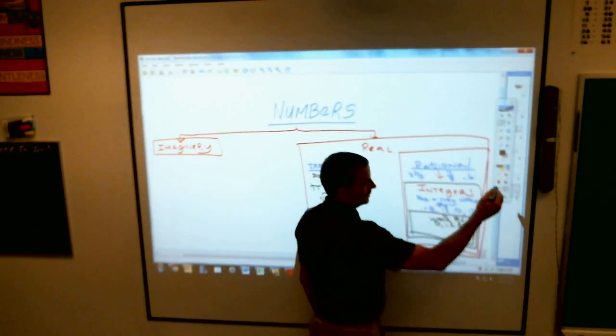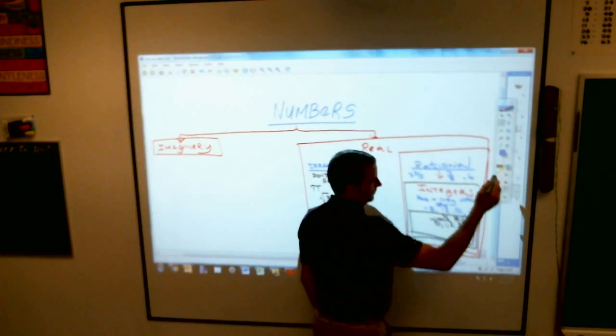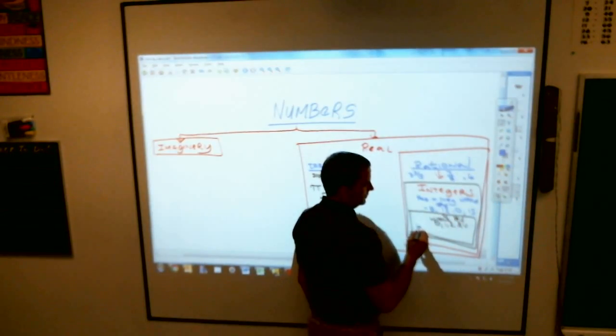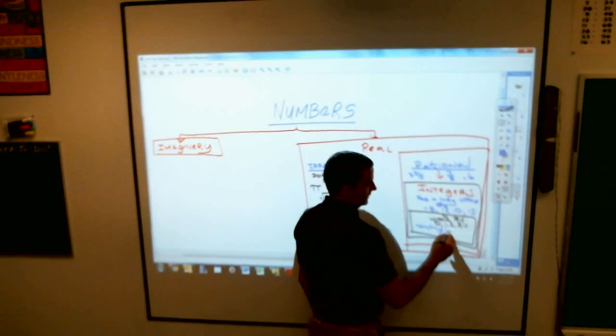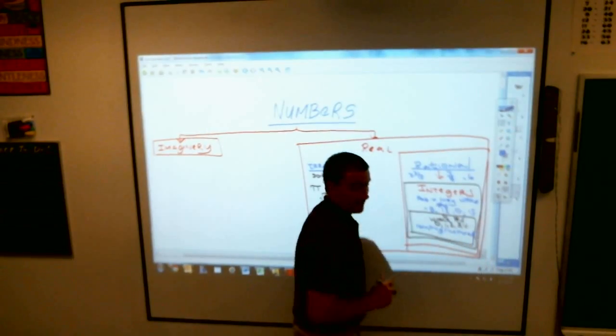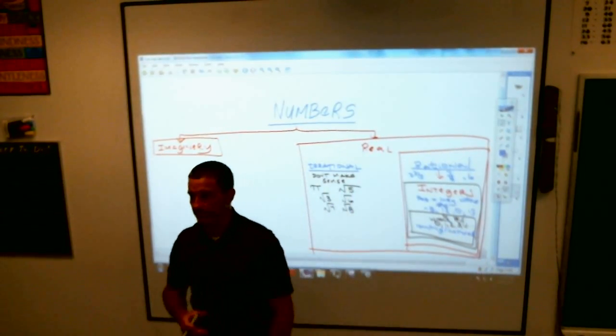And then one smallest category we have left are the counting numbers, which are also called natural numbers.